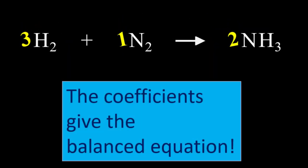The coefficients give the balanced equation. Note that a coefficient of 1 is normally not shown, it is implied, and so we omit the 1.